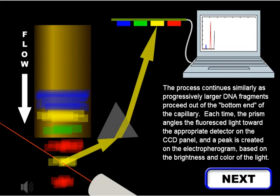The process continues similarly as progressively larger DNA fragments proceed out of the bottom end of the capillary. Each time, the prism angles the fluorescence light toward the appropriate detector on the CCD panel, and a peak is created on the electropherogram based on the brightness and color of the light.